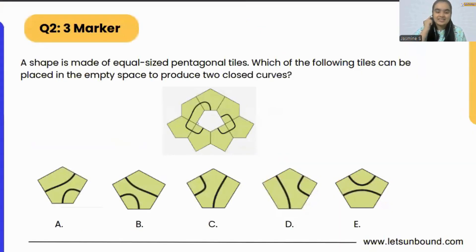The question is: a shape is made of five equally sized pentagonal tiles. If you will see this figure here, it is made up of pentagons, right? So pentagonal tiles. Now what they are saying is, which of the following tiles can be placed in the empty space to produce two closed curves.